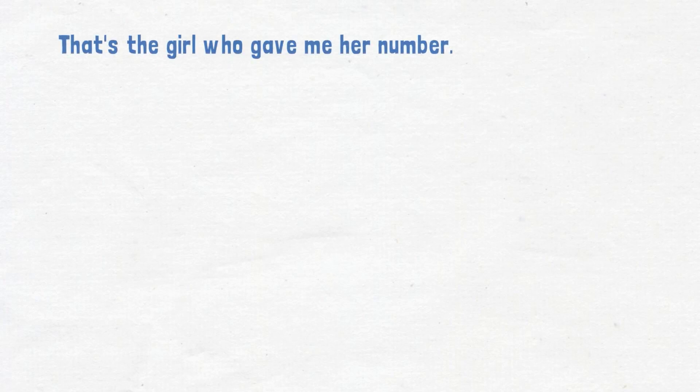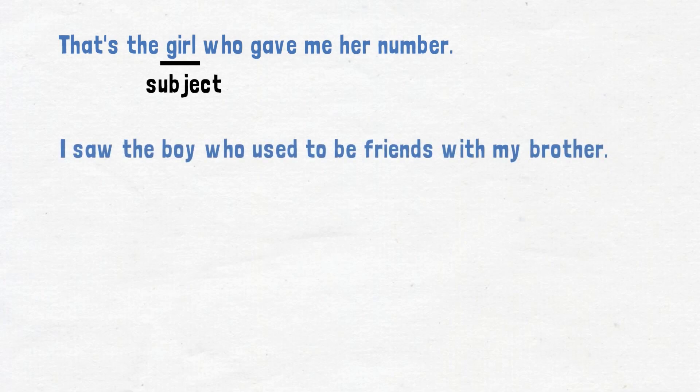That's the girl who gave me her number. In this sentence, girl is the subject of the sentence, so we use who. I saw the boy who used to be friends with my brother. In this sentence, boy is the subject of the sentence, so the correct word to use is who.